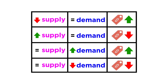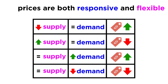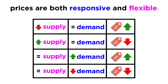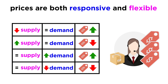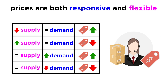So as we can see, prices are both responsive and flexible in order to solve the problems of too much or too little demand. Sellers can easily increase prices to solve the problem of a shortage, and just as easily decrease prices to solve the problem of a surplus.